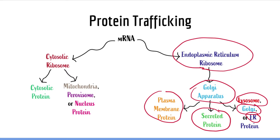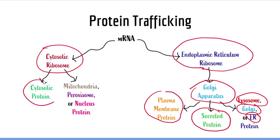Now let's talk about proteins made in cytosolic ribosomes. Proteins made in cytosolic ribosomes never enter vesicles and instead have special amino acid sequences which target the protein to its intended destination. These proteins typically stay inside the cell and can either stay in the cytosol or they can be targeted to specific organelles such as the mitochondria, the peroxisome, or the nucleus.